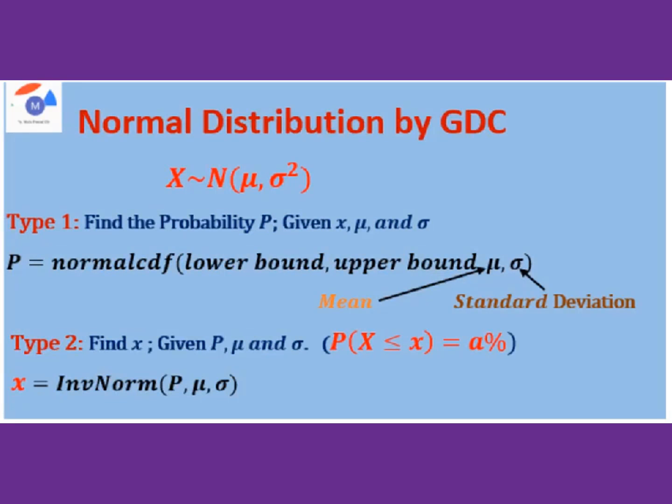Now let's talk about normal distribution problems. All together, there are three types of questions. Type 1: Find the probability P given x, mu, and sigma. Mu means mean, sigma means standard deviation. We use the normal CDF. Then put the lower bound and the upper bound, then the mean and standard deviation. You will get the probability.